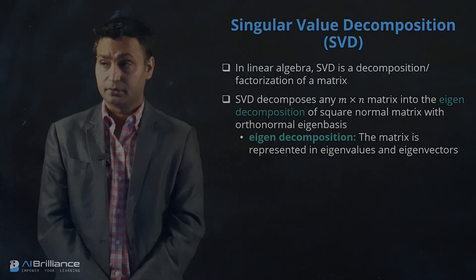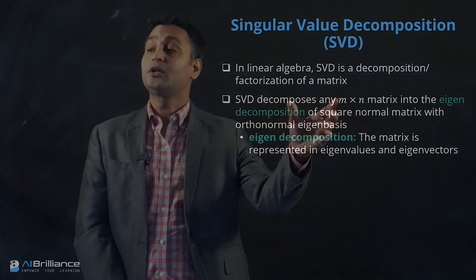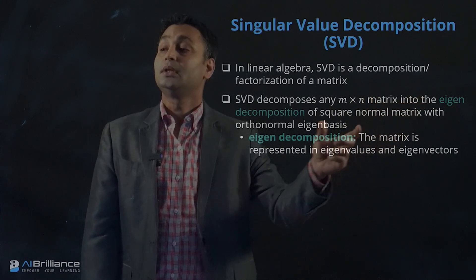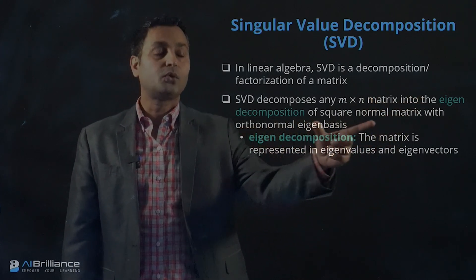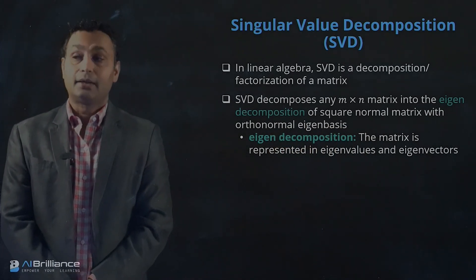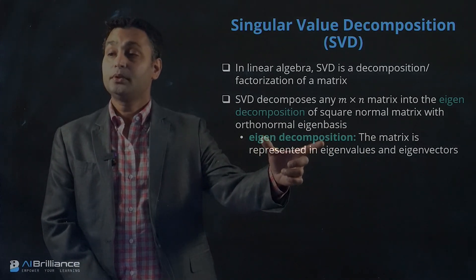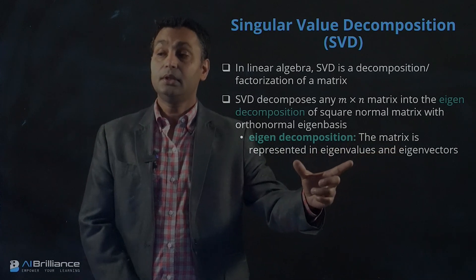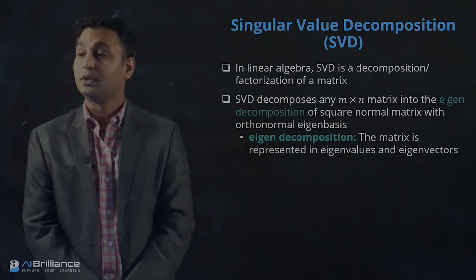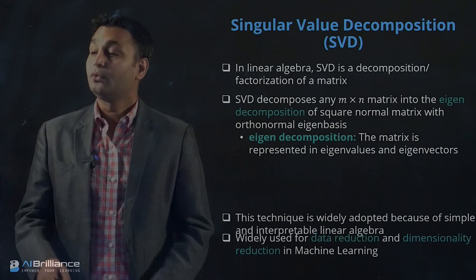SVD decomposes any m by n matrix into the eigen decomposition of a square normal matrix with an orthonormal eigenbasis. What is eigen decomposition? The matrix is represented in terms of eigenvalues and eigenvectors, which we have covered in the eigenvalue lecture.